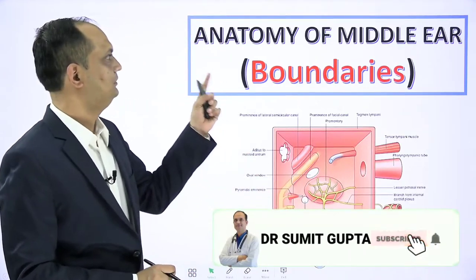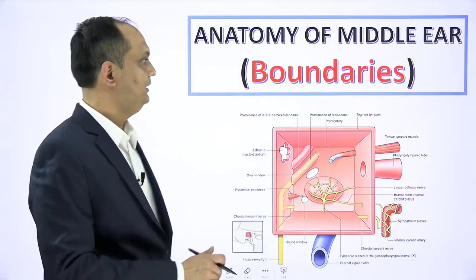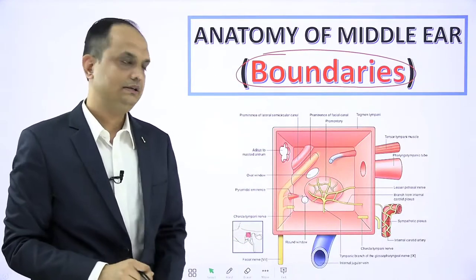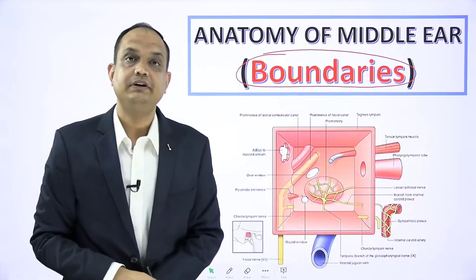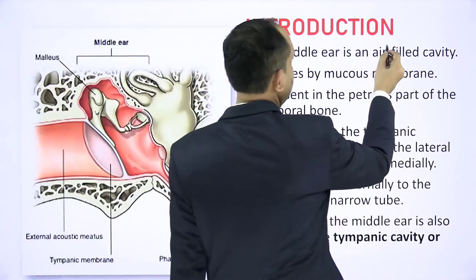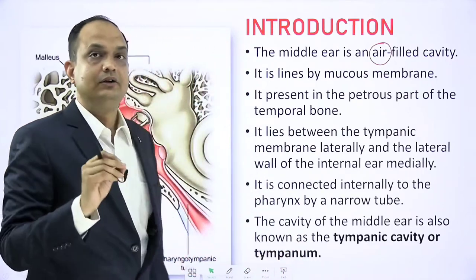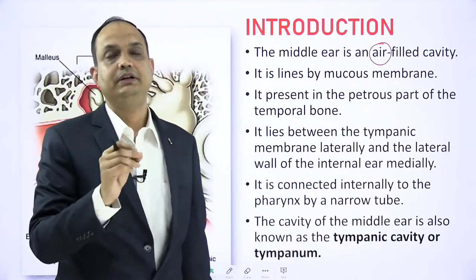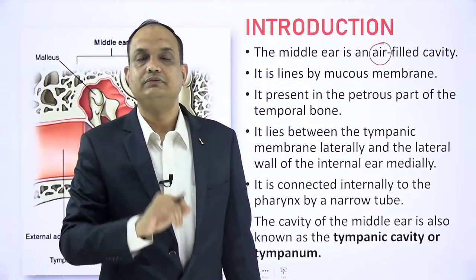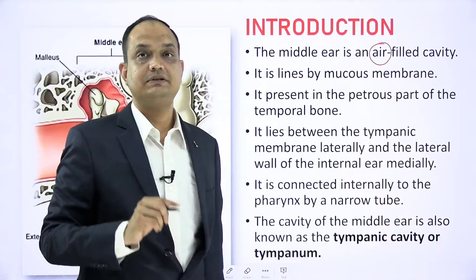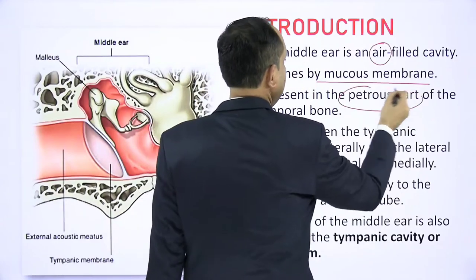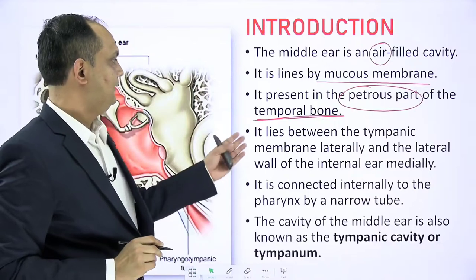Hello friends, today we will discuss the anatomy of the middle ear. We will mainly discuss the boundaries of the middle ear. The middle ear is a box-like structure, so we will discuss each and every wall of this box. The middle ear is a cavity filled with air. It has an auditory tube which connects the middle ear cavity to the nasopharynx, and this tube maintains the air pressure in the middle ear on both sides of the tympanic membrane.